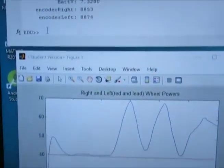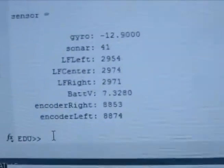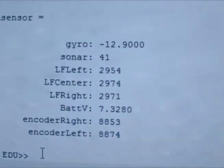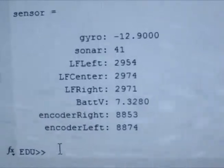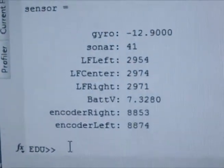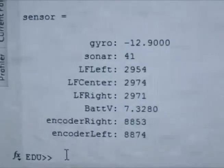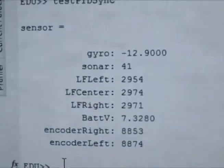And then here is the numbers at the end. We have the right encoder is 8853 and the left encoder is 8874. Not perfect, but very close.